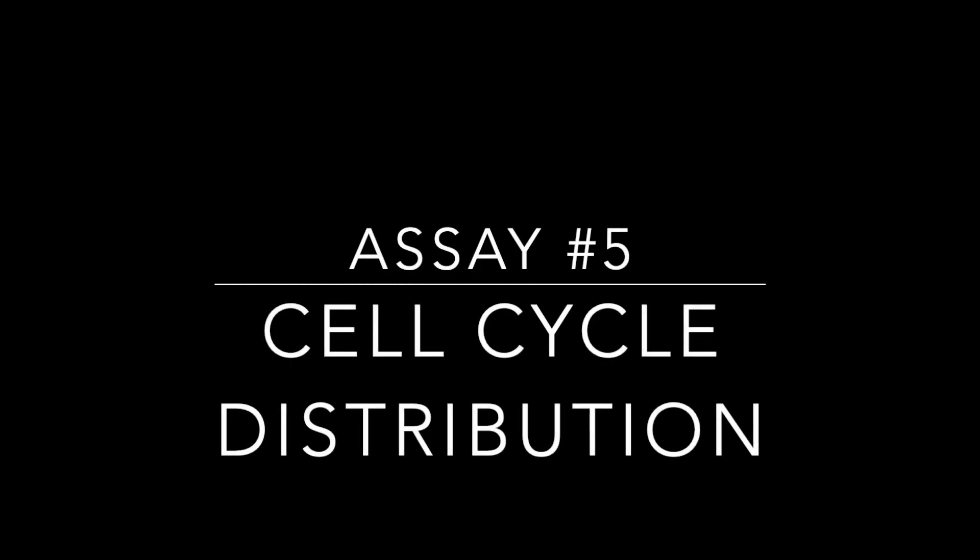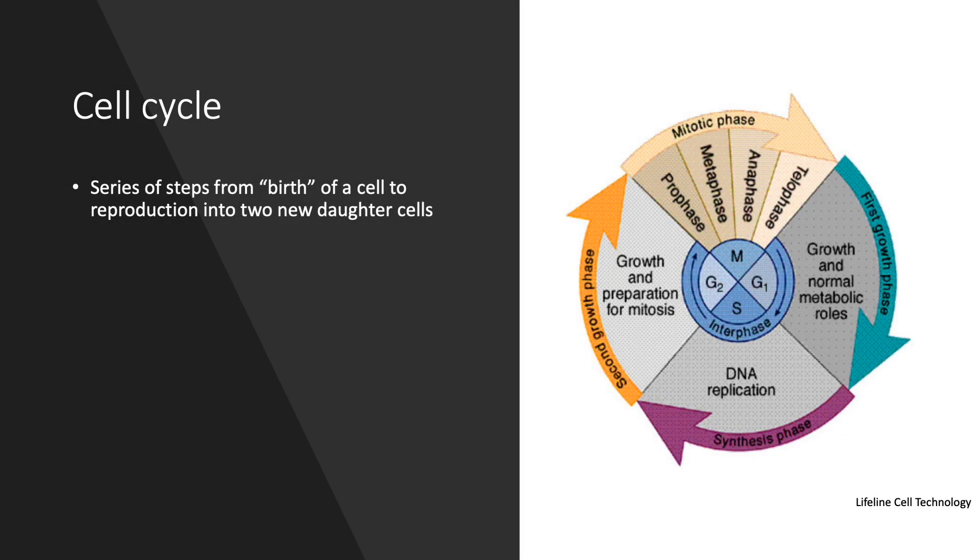Today, we will be studying the effect of our compound on the cell cycle using flow cytometry. Cell cycle is a series of steps that a cell undergoes from its birth or formation to reproduction which results in two new daughter cells.